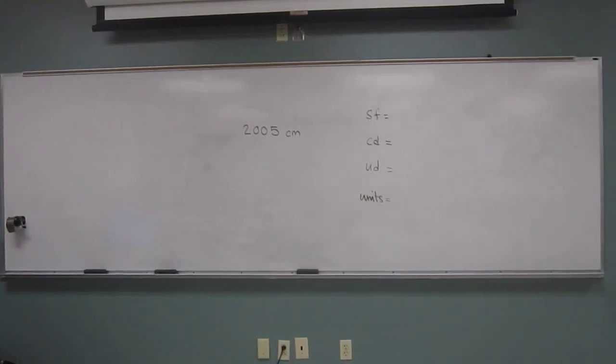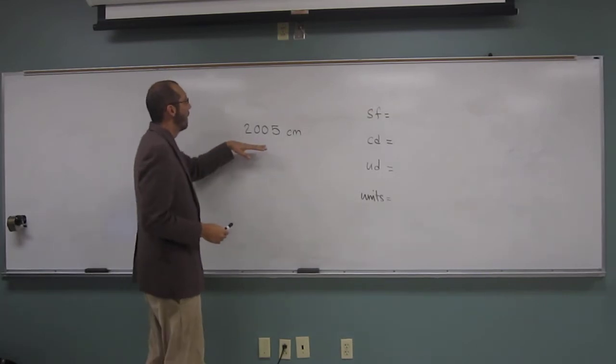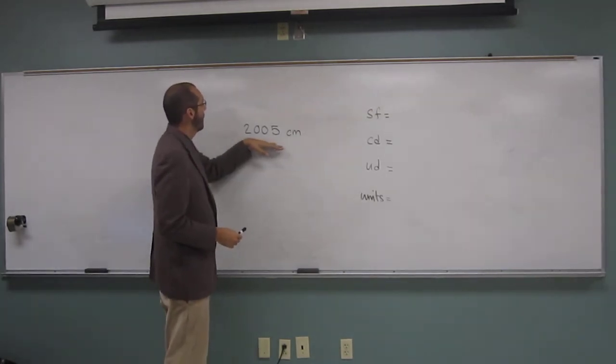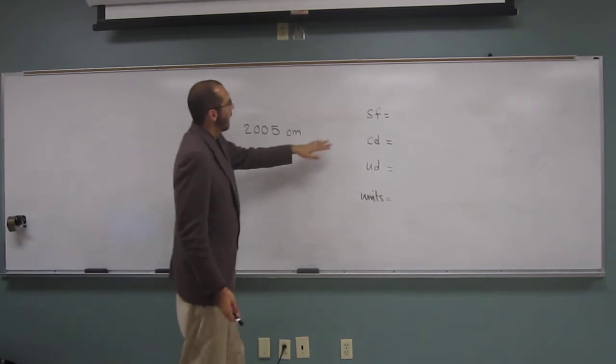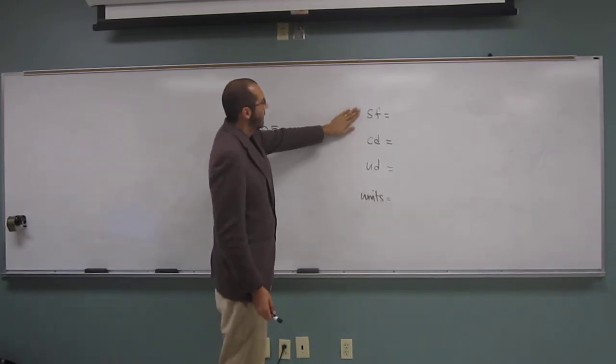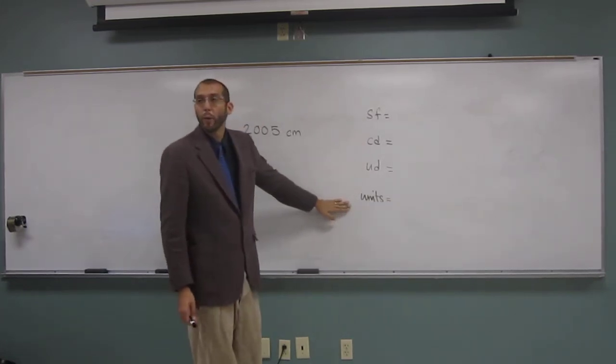So let's do another significant digit problem. Here's another measurement that we found in lab: 2005 centimeters. And we want to look at, try to figure out how many significant figures there are, how many certain digits, how many uncertain, and what are the units.